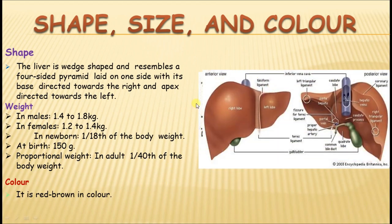When you hold the liver in the anatomical position, the base of the wedge is directed downwards and the apex is above and to the right side. Posteriorly you see the inferior vena cava in a groove. That is the normal anatomical position of the liver.